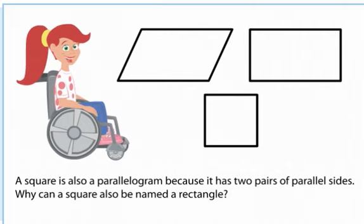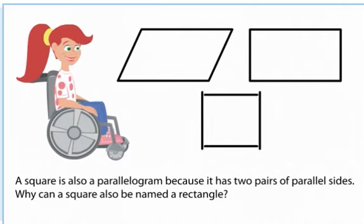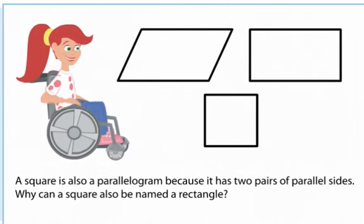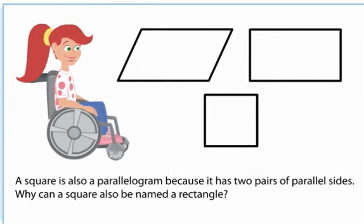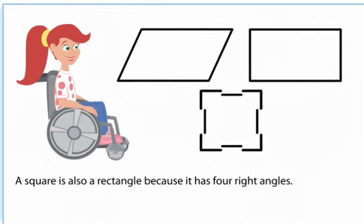A square is also a parallelogram because it has two pairs of parallel sides. A square is also a rectangle because it has four right angles.